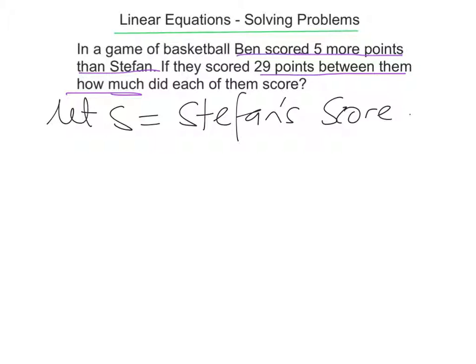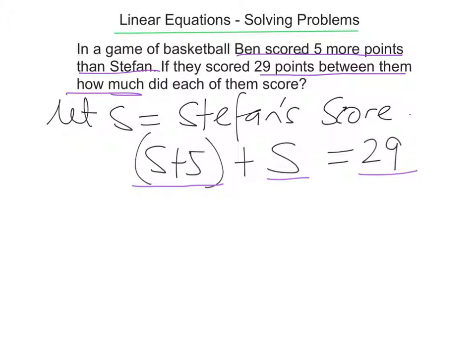That means I can write an equation with that letter in it. So Ben's score plus Stefan's score has to equal 29. So we're saying Stefan's score is S, and we're saying that Ben scored 5 more points than Stefan. So I can actually write S plus 5 for Ben. So Ben has 5 more points than Stefan. There is Stefan's score and the total is 29. So just to be really clear here, Ben's score is what's in the bracket. His score is the same as Stefan's plus 5 more, because he has 5 more points than Stefan.